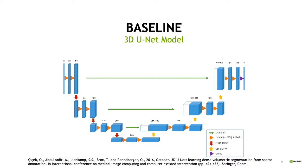The baseline model we are using is 3D U-Net, which is considered a state-of-the-art model for many applications of medical image analysis. It contains several components including a convolutional encoder, decoder, and skip connections between encoder and decoder. The U-shaped design enables end-to-end training and inference for image segmentation. The input is the image itself, and the output is a direct segmentation mask, enabling efficient and effective image-to-image translation.